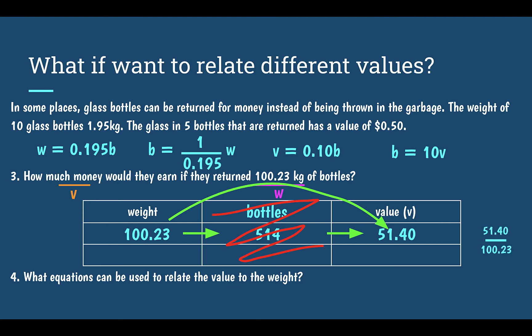If I wanted to figure out the constant of proportionality going from weight to value, I take the output — the value — and divide by our input, the weight: 51.4 divided by 100.23 comes out to be 0.513.